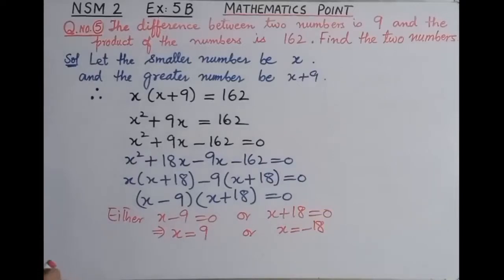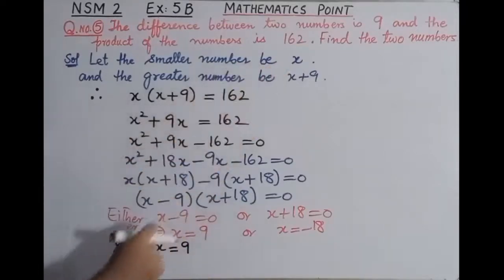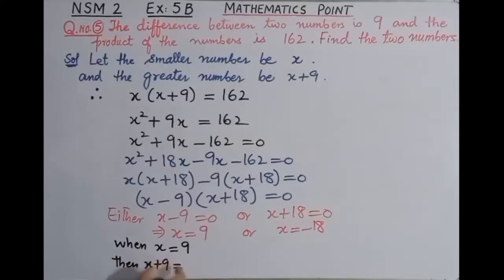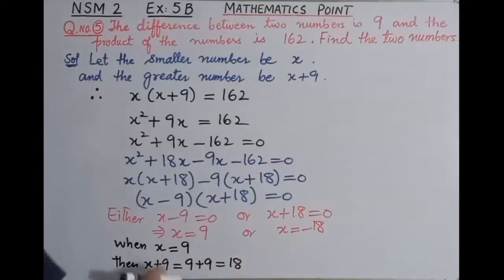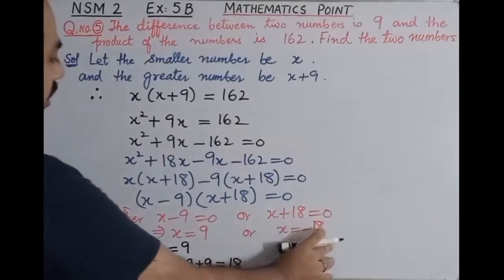Students, आपने जो smaller number select किया था वो x था और जो greater number था वो x plus 9 था। When x is equal to 9, then x plus 9 is equal to 9 plus 9, which gives 18. अगर x की value 9 लेते हैं तो x plus 9 जो है वो 18 आएगा — smaller number 9 हो तो greater number 18 आएगा।